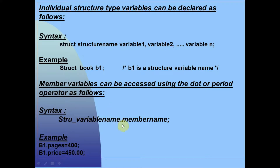Member variables can be accessed using the dot or period operator. The dot operator is used for calling the data members from the structure. Syntax: structure_variable_name dot member_name. Example: b1.pages = 400, where b1 is the object name calling data members from the structure, and b1.price = 450.